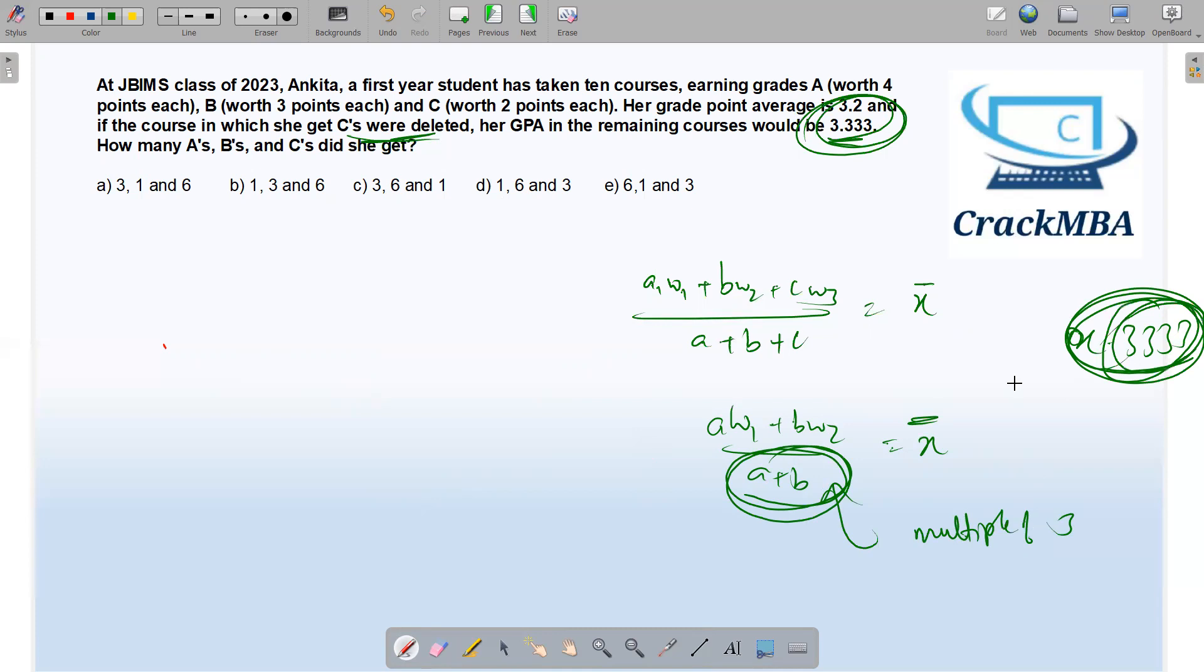Now let's check which option has a multiple of 3. A plus B value can be achievable from the options. So 3 plus 1 is 4. 1 plus 3 is 4. 3 plus 6 is 9. 1 plus 6 is 7. 6 plus 1 is 7. So there is only one option in which I am getting a multiple of 3, and this is the right answer.